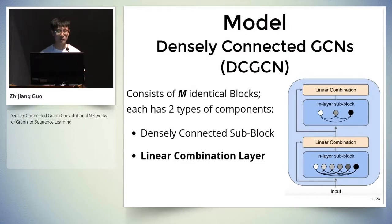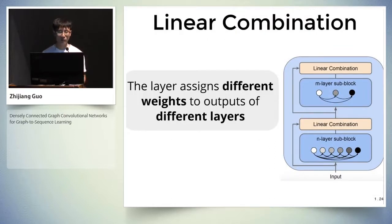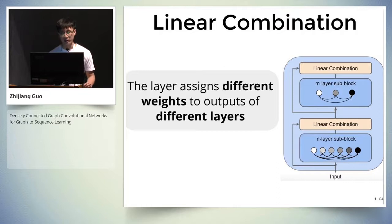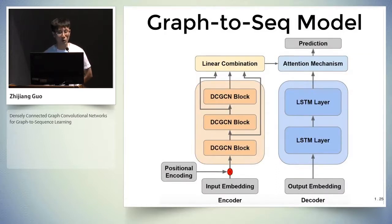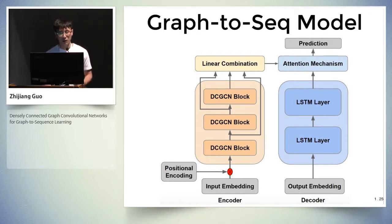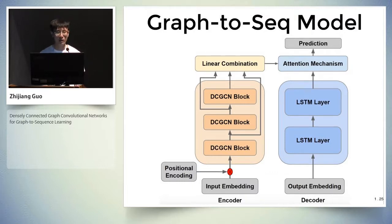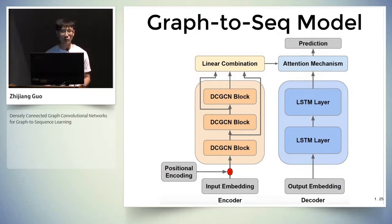The second component is the linear combination layer, which assigns different weights to the output of different layers, enabling the model to integrate representations from different abstract levels to form a better representation. Here is the full model architecture for the graph-to-sequence learning task. For the input, we use input embedding plus positional embedding with task-specific positional encoding. The graph encoder consists of multiple identical DC-GCN blocks, followed by another linear combination layer to integrate their representations. For the LSTM decoder and attention mechanism, we follow previous work for a fair comparison.